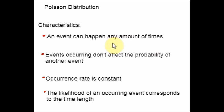And the second one is events occurring don't affect the probability of another event that also occurs within the same period. They are independent. And the occurrence rate is constant. It will not change based on the time. And fourth important characteristic is the likelihood of an occurring event corresponds to the time length. These are the characteristics of Poisson Distribution.